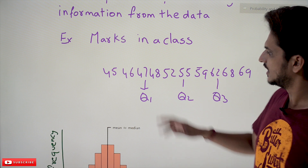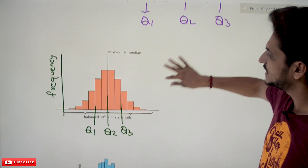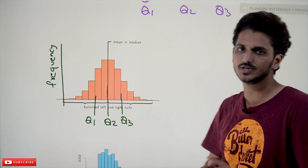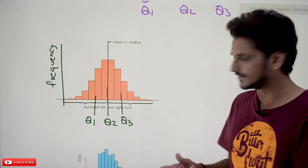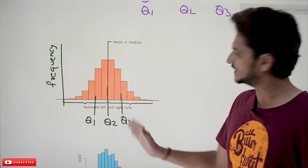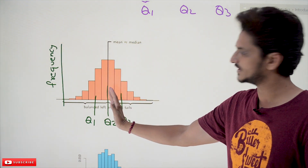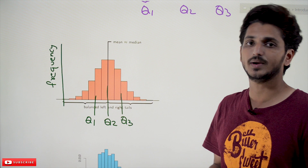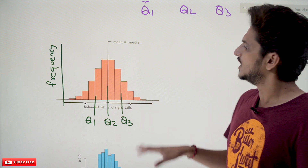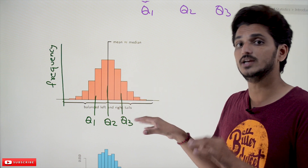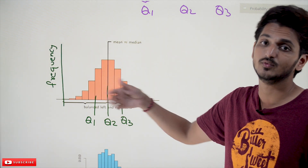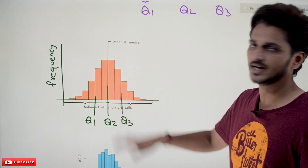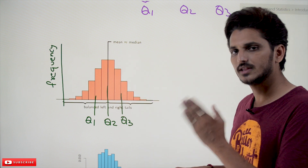Now let's look at the diagrammatical intuition. These distributions were already discussed in our previous classes. For a symmetric distribution, if you identify the quartile points: the median value Q2 is at the center, the lower quartile Q1 comes to the left, and the upper quartile Q3 comes to the right. This gives you a better understanding of the data. We're showing this graphical intuition because it will help a lot in understanding upcoming classes, especially when we discuss Gaussian distribution and probability distributions.